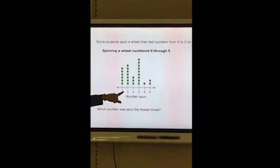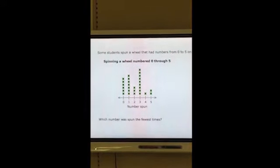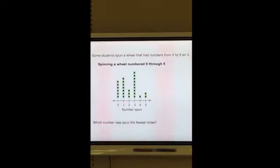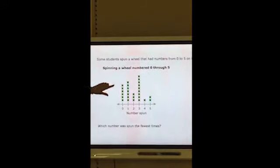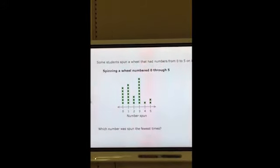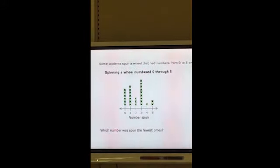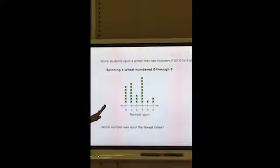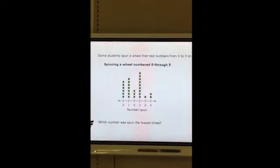We are told here that these numbers represent numbers spun. So let's go up here and read the problem. It says some students spun a wheel that had numbers from 0 to 5 on it. So we know that these are the numbers that are on the wheel. And so the X's represent the students. So every time you see an X on this line plot, it represents a student. So we see the numbers 0 through 5. We could ask all different kinds of questions regarding this data, so let's see what the question is.